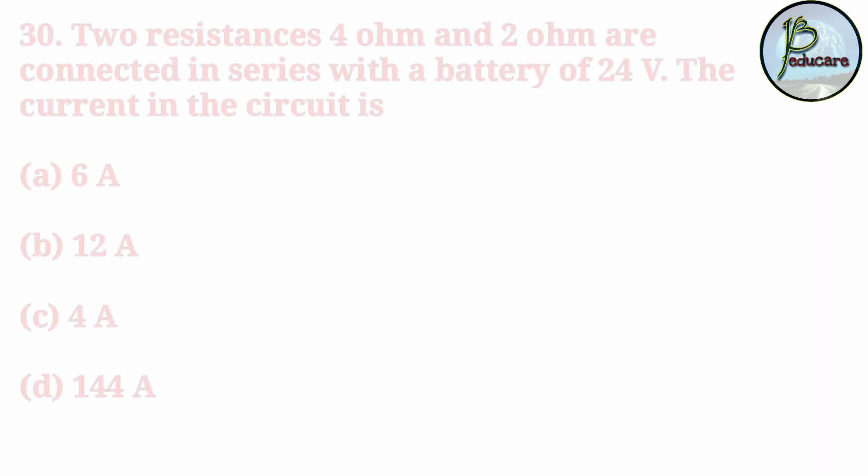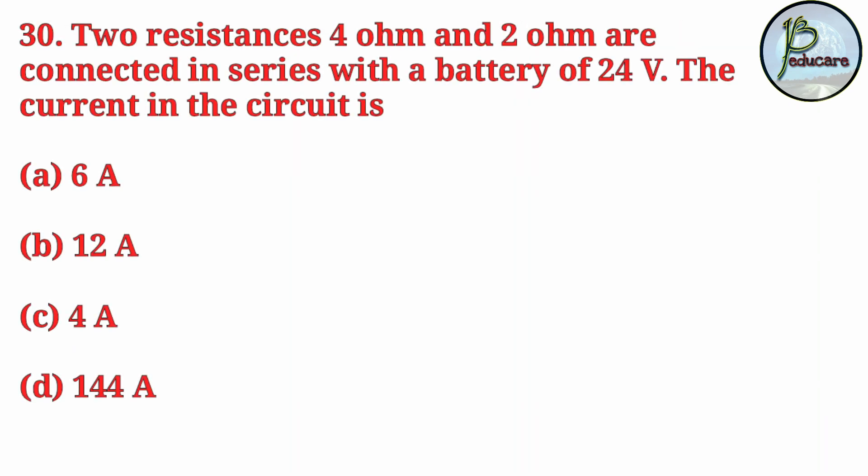Next question, which is the last question of this video: Two resistances of 4 ohm and 2 ohm are connected in series with a battery of 24 volt. What is the current in the circuit?